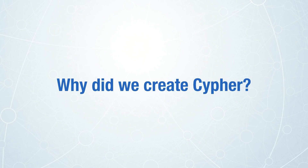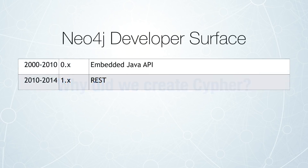In order to understand the value in Cypher as a Graph Query Language, it's important to understand why we created Cypher, and that has to do with the history of the Neo4j Developer Surface. When Neo4j first started around year 2000, we had an embeddable Java API. This Java API allowed you to imperatively traverse a graph, create new relationships and nodes, but was only accessible within Java. Around the 1x series of Neo4j in 2010, we wanted to extend these capabilities into other clients on the network, and for that we created a REST-based API.